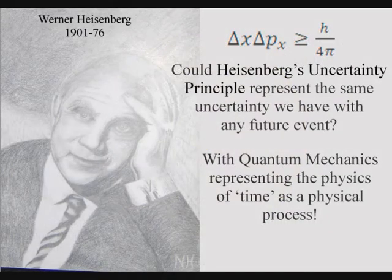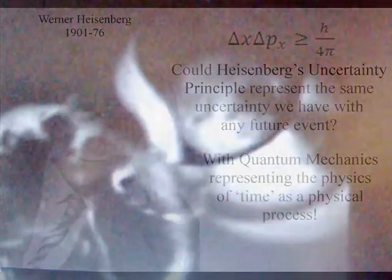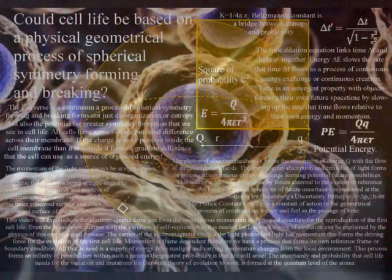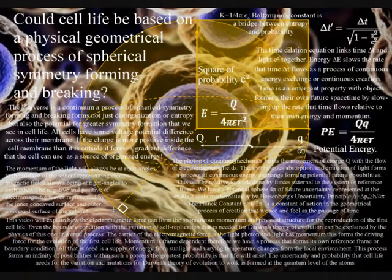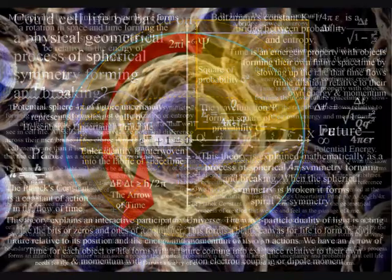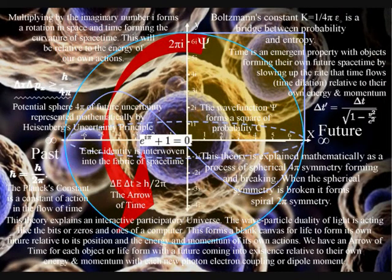This process of symmetry forming and breaking forms the potential for the complexity and diversity of cell life. If we take an individual cell, we find the same process of energy exchange relative to the structure of the cell, with the build-up of positive and negative charge across the membrane of the cell. The photon forms a movement of charge. Therefore, what we are seeing is the future unfolding with the exchange of photon energy, with the movement of charge relative to each individual cell.